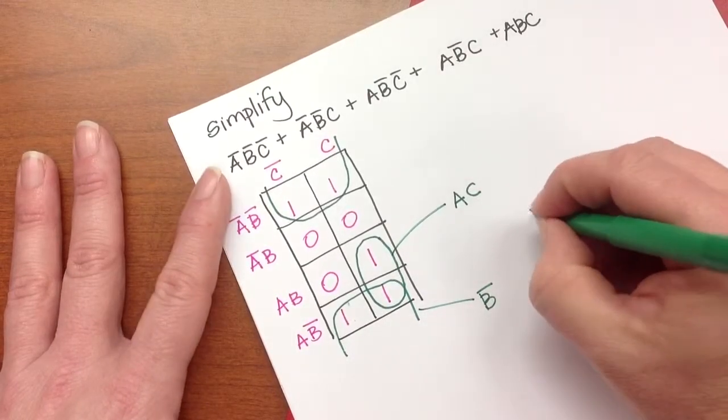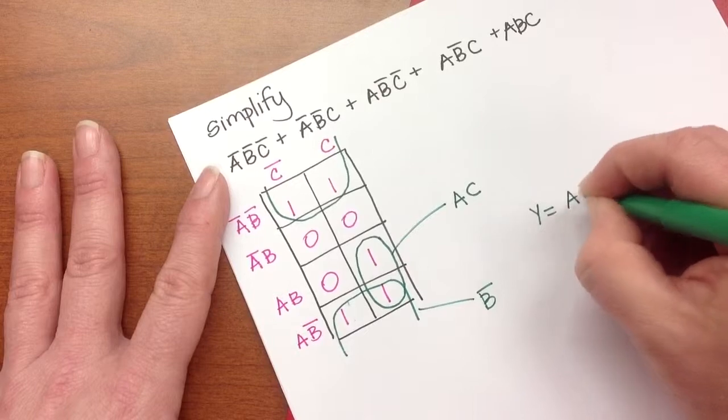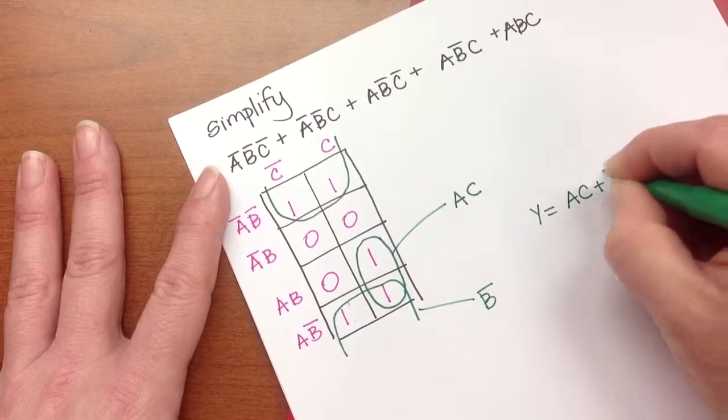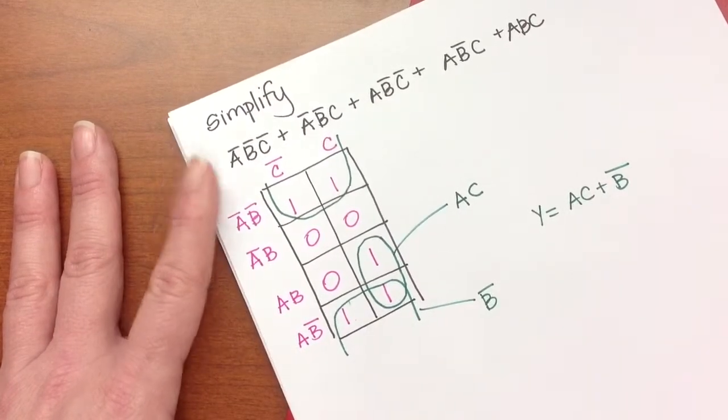So this expression would work out to be Y equals A, C, or not B. So I hope that helps just a little bit.